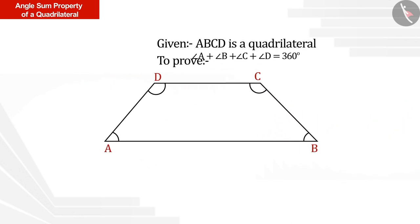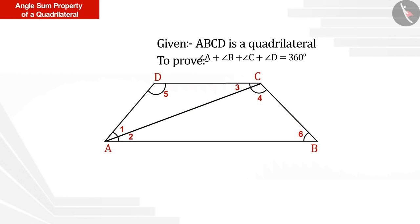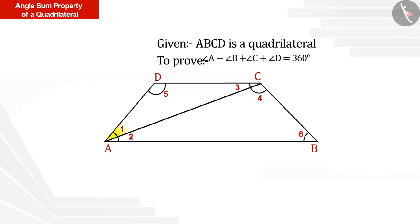Let us look at verification in its mathematical form. We draw a diagonal which divides the quadrilateral into two triangles. For example, we have joined AC. This quadrilateral is now divided into two triangles: triangle ADC and triangle ABC. As you can see, angle A is divided into angle 1 and angle 2, and angle C is divided into angle 3 and angle 4.